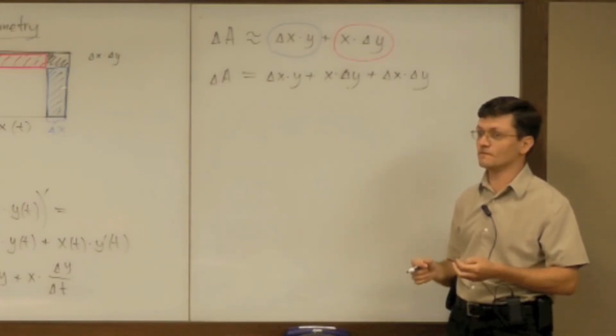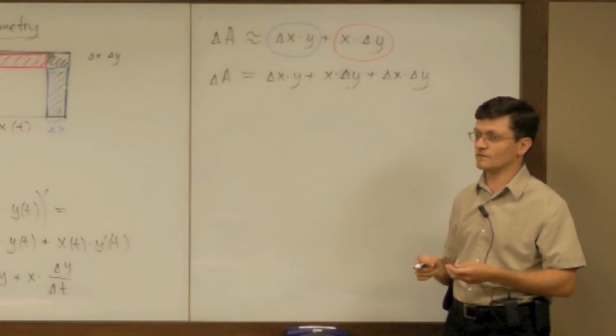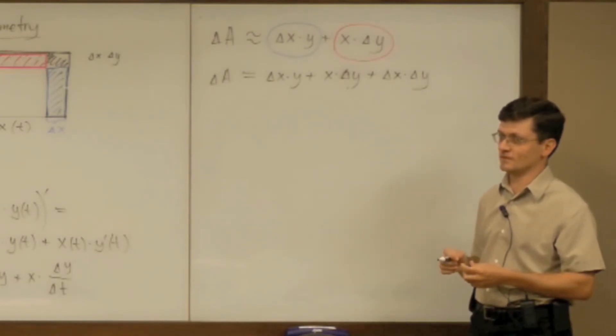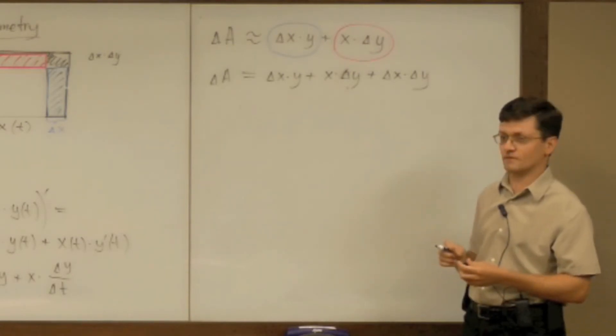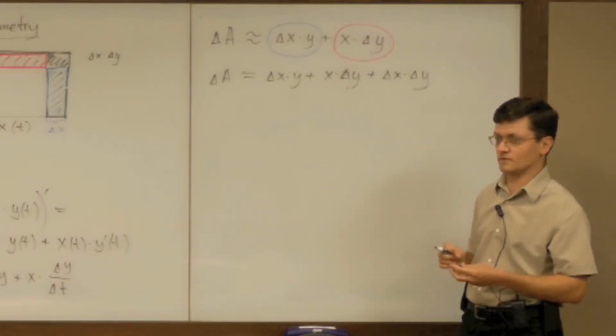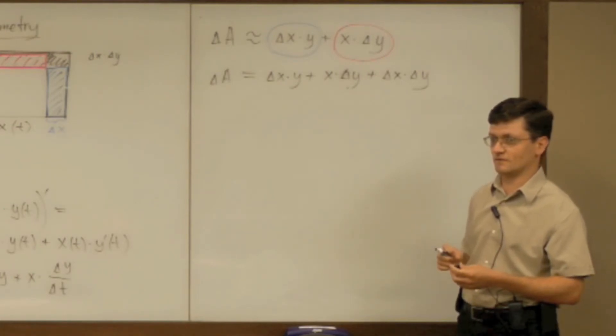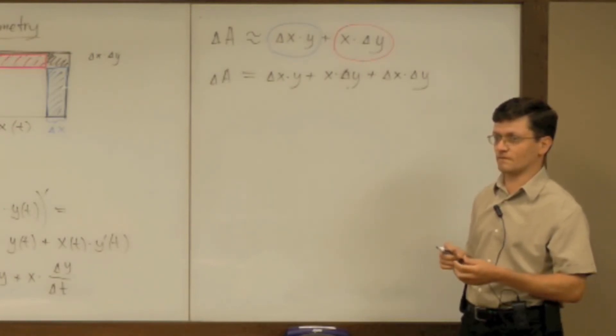In calculus you just take derivative or a limit to find which one goes to zero faster. But here you can just say that because both of them, delta x is going to zero and delta y is going to zero, their product can go to zero much faster. It will be exponential while delta x times y is linear.